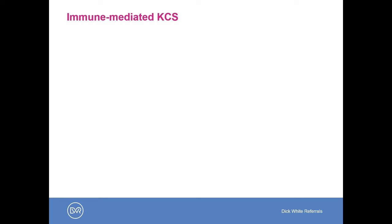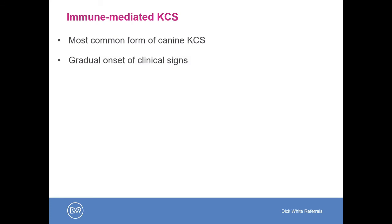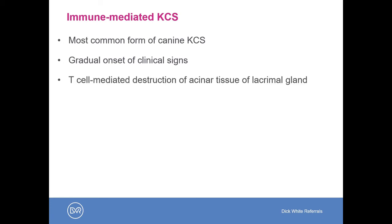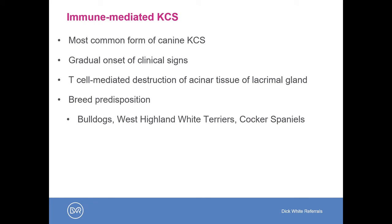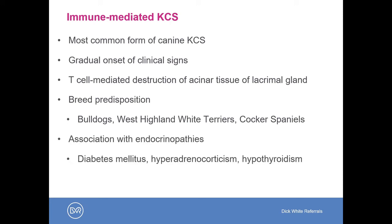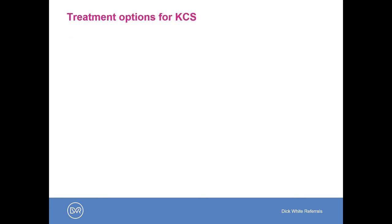Now on to immune-mediated dry eye, which is the most common cause we'll be dealing with in practice. Usually this form of dry eye is associated with a gradual onset of clinical signs, but sometimes presentation can be quite acute. There is a T-cell mediated destruction of the acinar tissue of the lacrimal gland. There is a breed disposition — in the UK this disease occurs most commonly in Bulldogs, West Highland White Terriers, Cocker Spaniels, and others. Immune-mediated dry eye is also more common in dogs with endocrinopathies — those with diabetes mellitus, Cushing's disease, and hypothyroidism appear to be at higher risk.